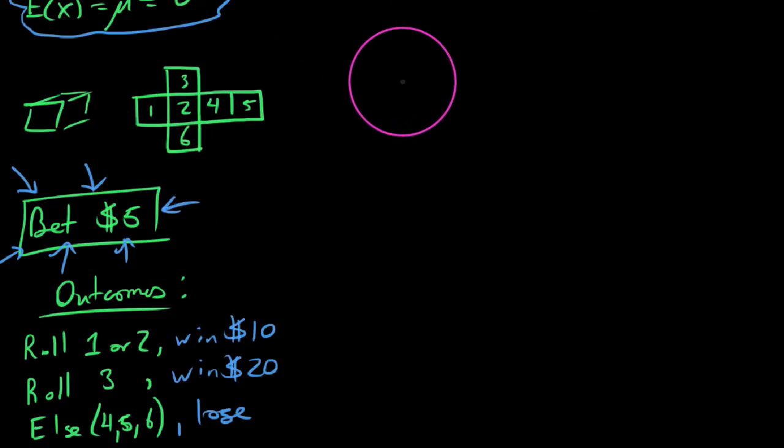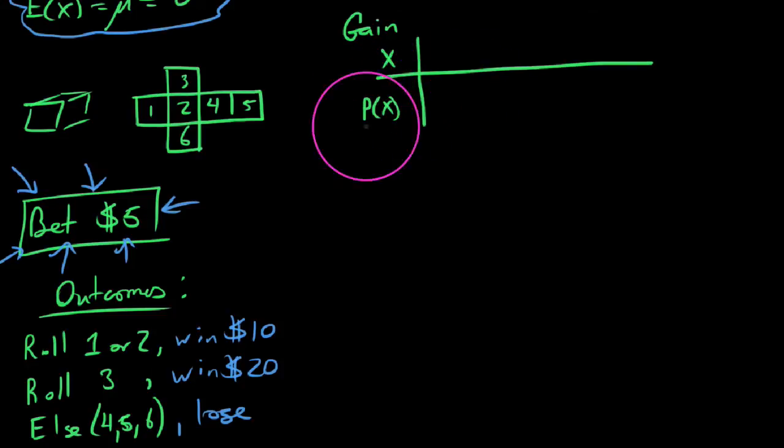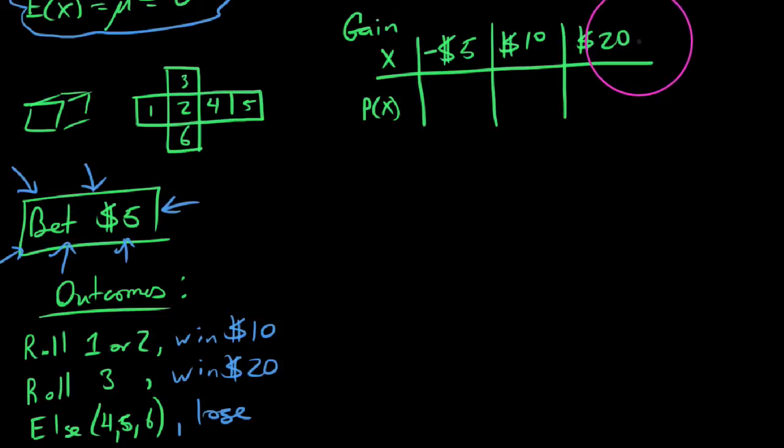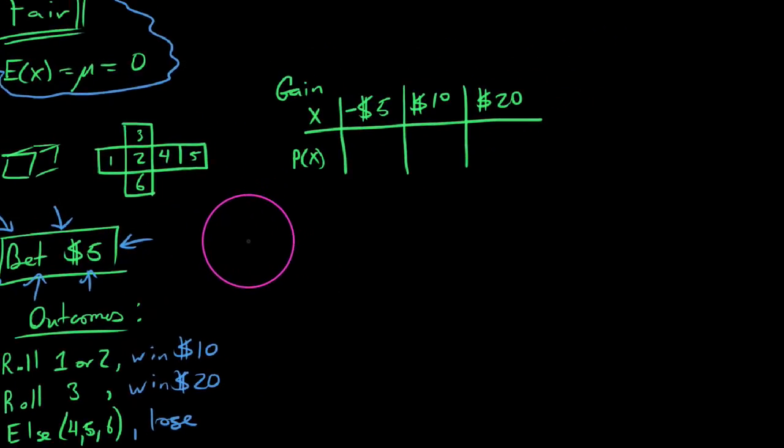Let's go ahead and start with creating our probability distribution. We have X, which represents the amount of gain in this instance, all possible outcomes, and then the likelihoods of each thing happening. When you play this game, what are the possible things that could happen? Well, I'll tell you one thing that's going to happen: you could lose $5. But we also see we could win $10 or we could win $20. And I'm afraid in terms of the amounts of gain, those are the only possible outcomes.